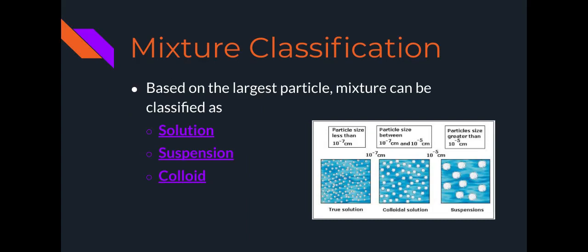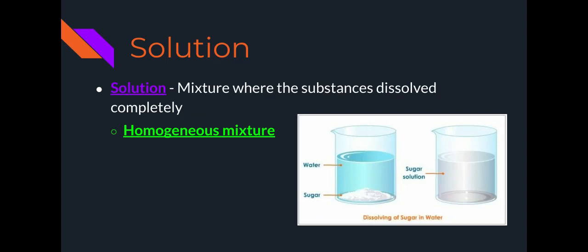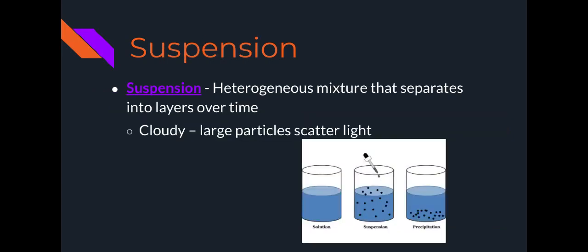Mixture classification. They're based on the largest particle a mixture can be classified. We have solution, suspension, and a colloid. First one is solution. A solution is a mixture where the substance is dissolved completely. So this is a type of homogeneous mixture. Now a suspension is a heterogeneous mixture that separates into layers over time.